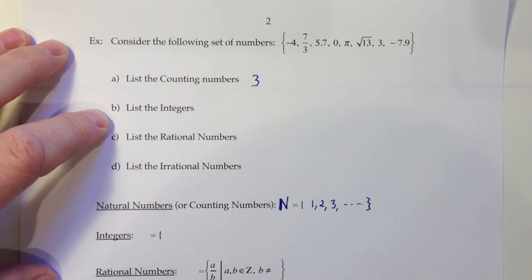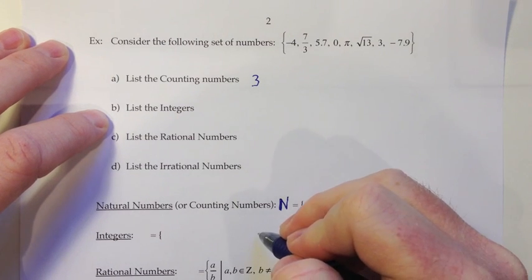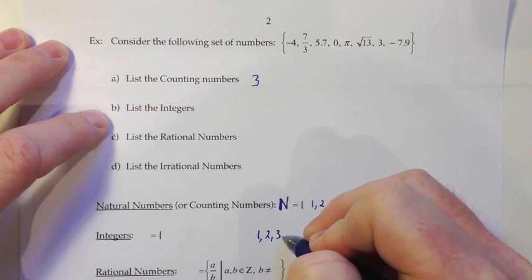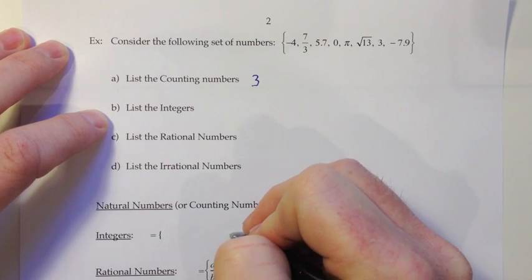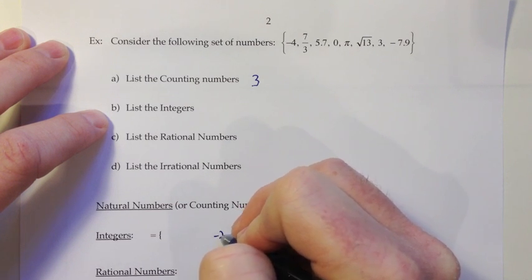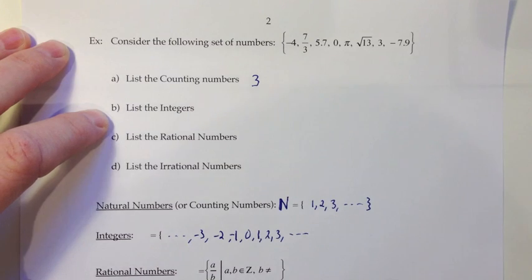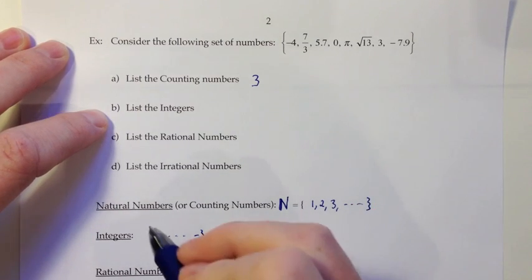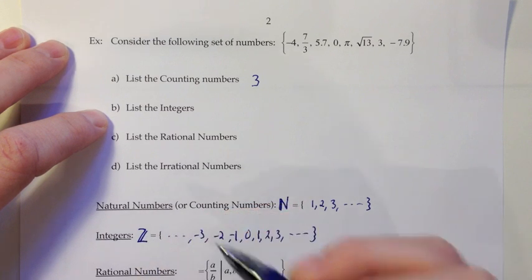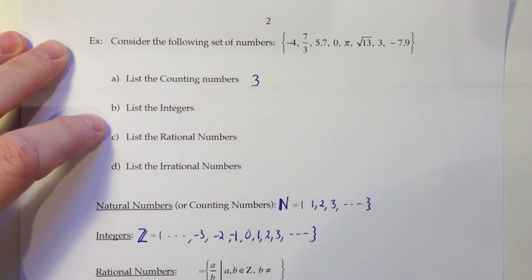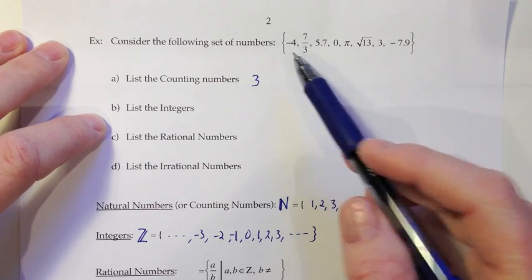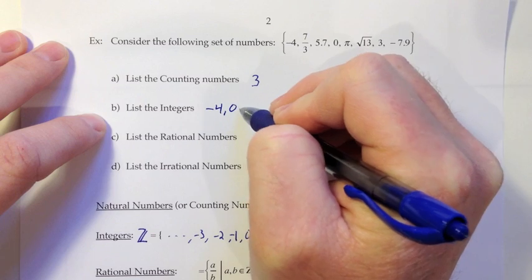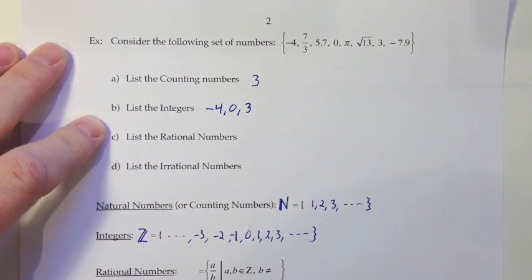Alright, next they want us to list the integers. When you're doing the integers, you have all of your counting numbers. So you've got 1, 2, 3, and so on. You've also got 0 in this list. And then you've also got all the negatives of your counting numbers. So, negative 1, negative 2, negative 3, and so on. So that's your set of integers. For integers, they use a capital Z. And again, I'll draw that extra line there to make it look like a special Z, not just any old variable Z. And when we look up at our list, what we've got in there is the 0 now would be counted. The 3 is still counted. And now we'd also do the negative 4 as well. And I'll do those in order. So negative 4, 0, and 3. And that's our integers.